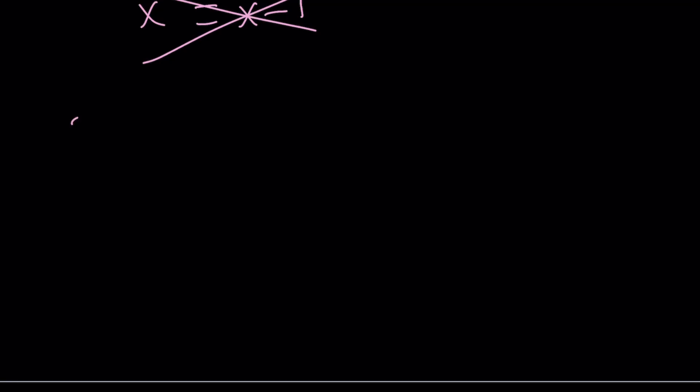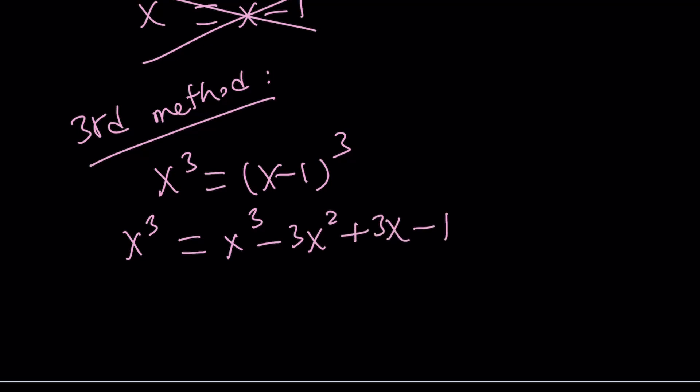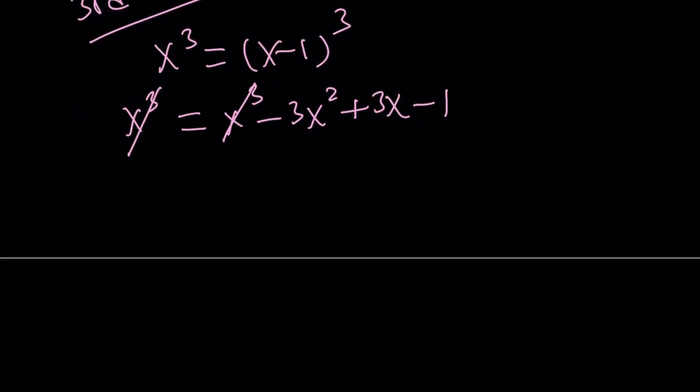The third method should be the most obvious. Just expand it. So we have x³ equals (x - 1)³. If you expand (x - 1)³ using the binomial theorem, you're going to get x³ - 3x² + 3x - 1. In this case, x³ cancels out. You can put everything on the left-hand side to make the x² positive. 3x² - 3x + 1 = 0. And as before,